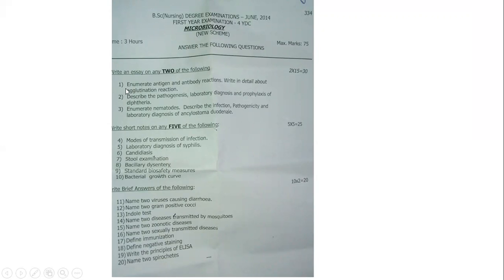Write an essay on any two of the following three questions: first, enumerate antigen and antibody reactions and write in detail about agglutination reaction; second, describe the pathogenesis, laboratory diagnosis, and prophylaxis of diphtheria; third, enumerate nematodes and describe the infection, pathogenesis, and laboratory diagnosis of Ankylostoma duodenale. You can choose two of these three.